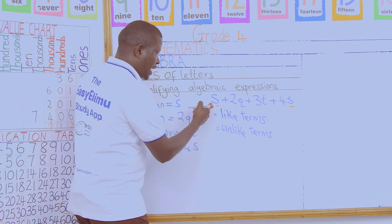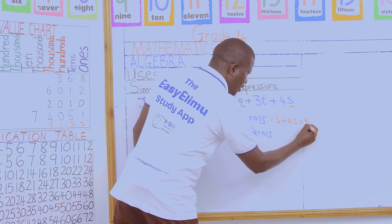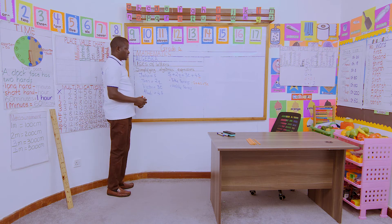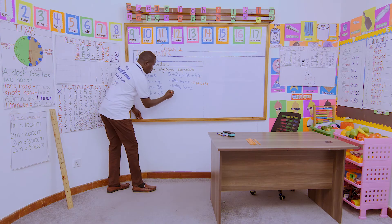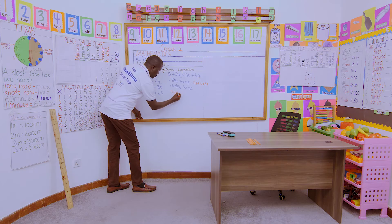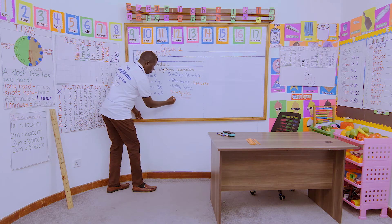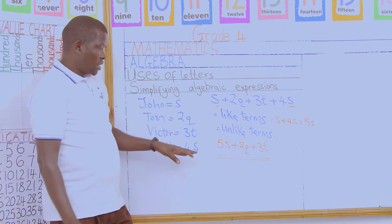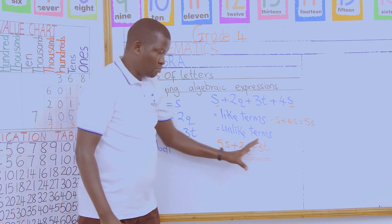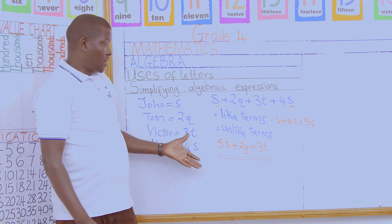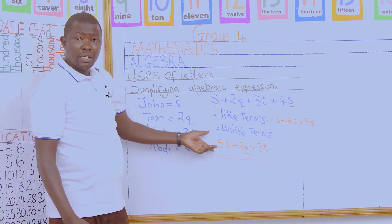We will now bring in the like terms. We take S plus four S, and when we bring them together we get five S. The others are unlike terms. So our final simplified algebraic expression will be five S plus two Q plus three T. That is our final simplified algebraic expression. We have shortened it by bringing the like terms together.